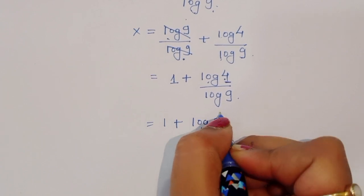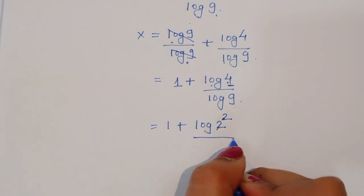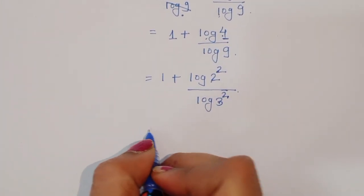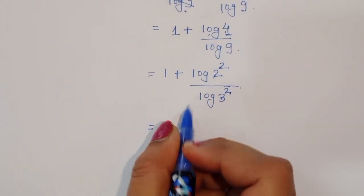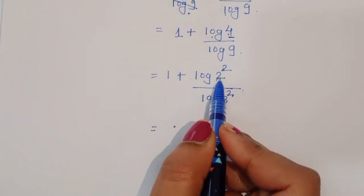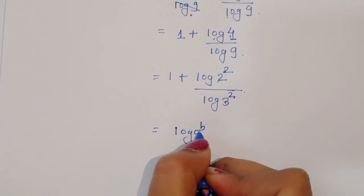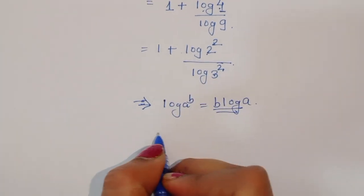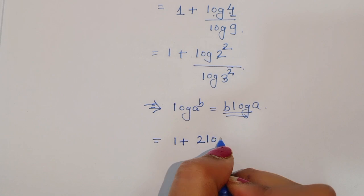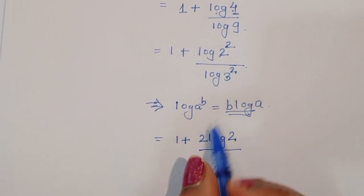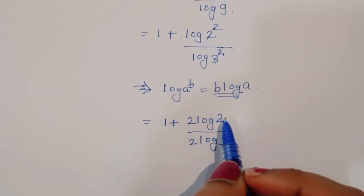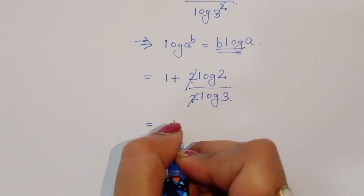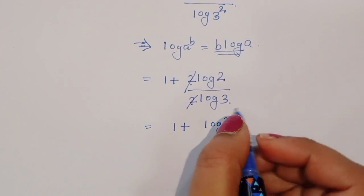Now we can write log of 4 as log of 2 squared, and log of 9 as log of 3 squared. Using the formula log of a power b equals b log of a, we get x is equal to 1 plus 2 log of 2 divided by 2 log of 3. The 2 is common, so we can cancel it: x is equal to 1 plus log of 2 divided by log of 3.